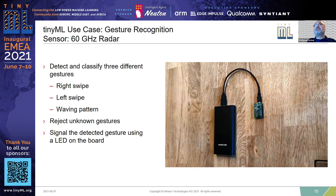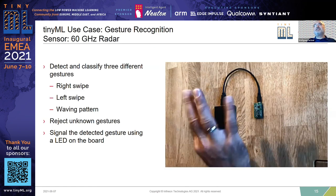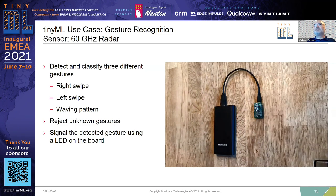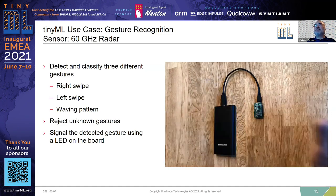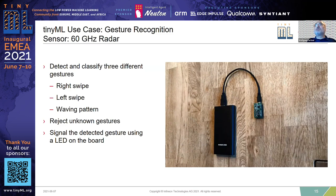This is an example already shown in a talk on Monday by one of my colleagues — a 60 GHz radar sensor gesture sensing example, classifying three gestures: left swipe, right swipe, and finger waving. It's also trained to be robust against unknown gestures. This is interesting, for example, for vending machines that you want to operate touchlessly. The big box here is just a power brick for the power supply of the demonstrator.